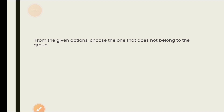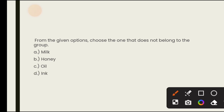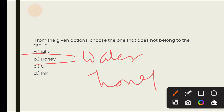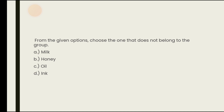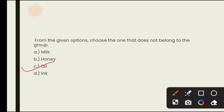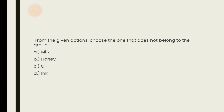From the given options, choose the one that does not belong to the group: milk, honey, oil, and ink. Milk is soluble in water, honey is soluble in water, ink is also soluble in water when added. Oil is not soluble in water, making it the odd one out. The answer is option C — oil.